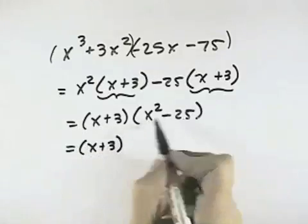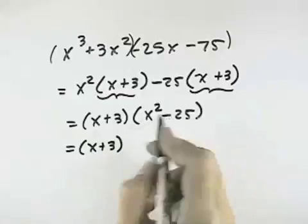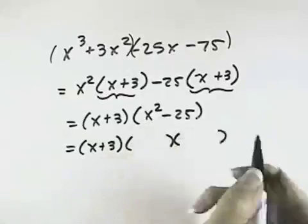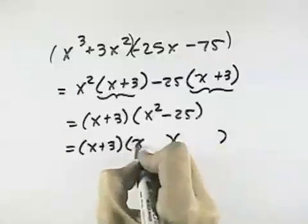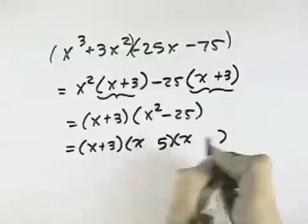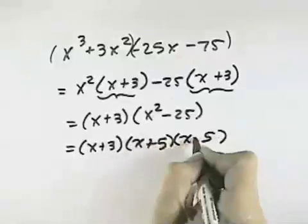In the second one, though, we have two terms that are perfect squares and its subtraction. So that means I can break it down into the difference of squares, which is the sum and the difference of their square roots. The square root of the first term is x. The square root of the last term is 5. So I have x plus 5 and x minus 5.